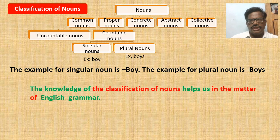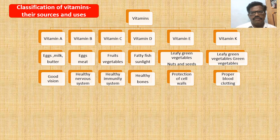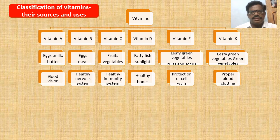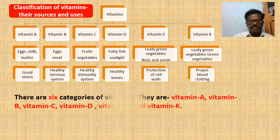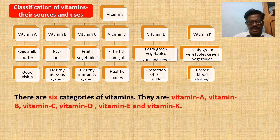Here is another example of a tree diagram with regard to classification as well as other information. This tree diagram is about vitamins — their classification, and it also gives information about the sources and uses of vitamins. Introduction: 'This is a tree diagram. It is about the classification of vitamins, their sources, and usage.' There are six categories of vitamins. They are Vitamin A, Vitamin B, Vitamin C, Vitamin D, Vitamin E, and Vitamin K.